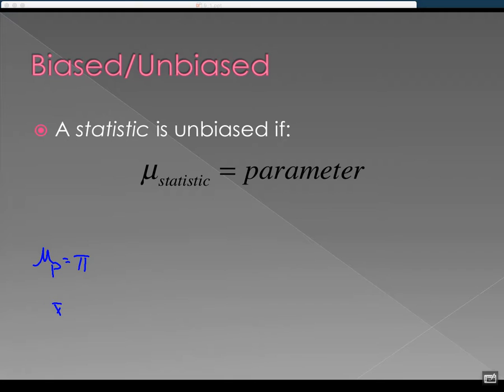If I take all the samples of size five and I calculate the average age, and then I average all of those averages, I'm going to get the population mean. Population mean age, that is. So this is back to sampling distribution. You've got to look at every single sample of the same size. If I average them, I'm going to get the population parameter. That's for unbiased.